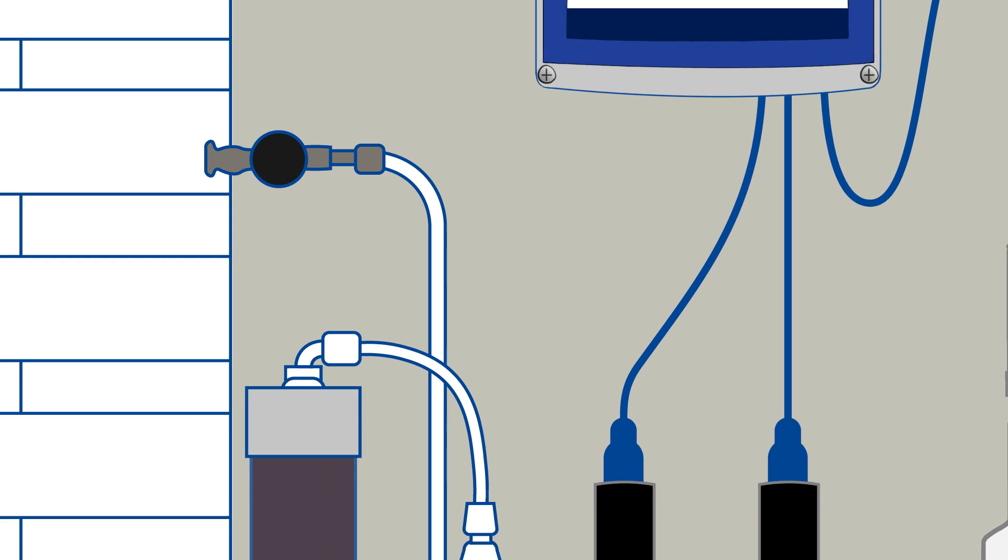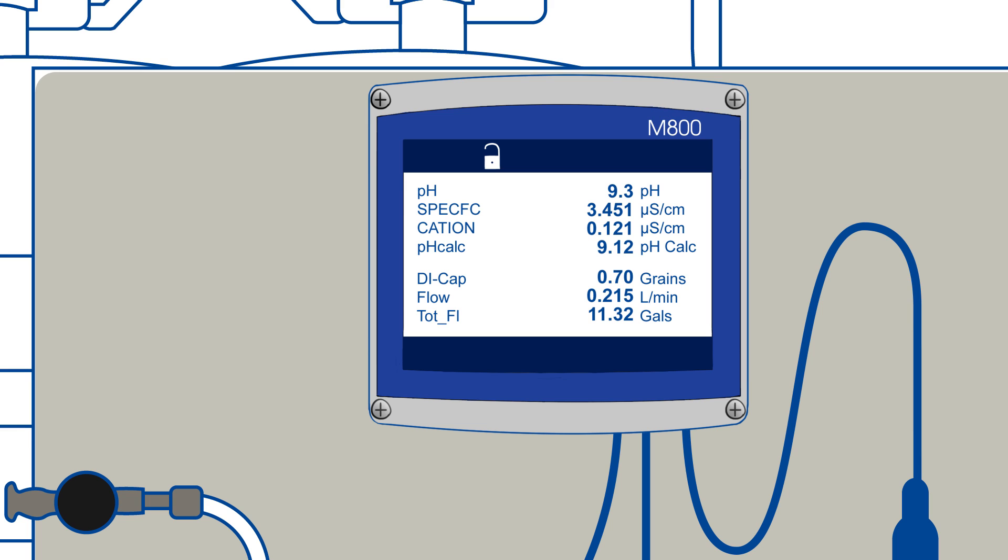Mettler-Toledo Thornton's M800 multi-parameter transmitter can provide traditional pH measurement, calculated pH, as well as specific and cation conductivity to ensure accurate and reliable pH control.